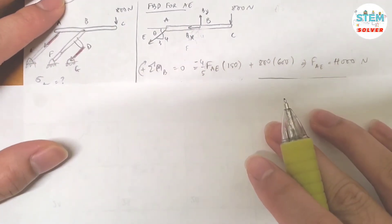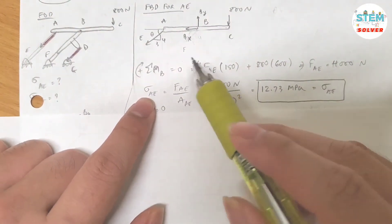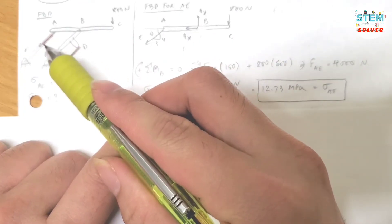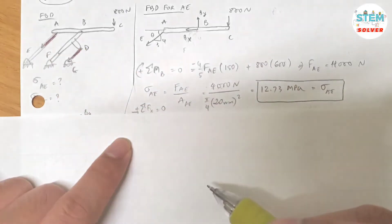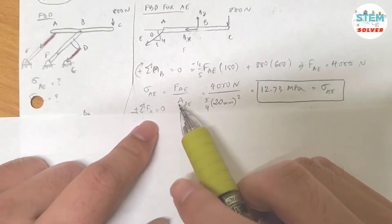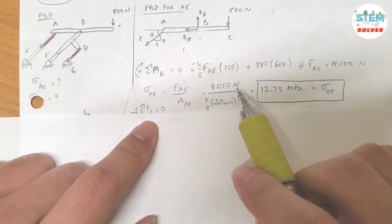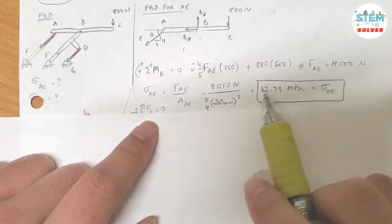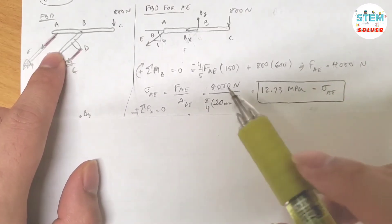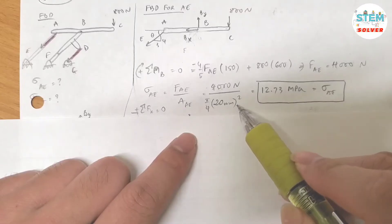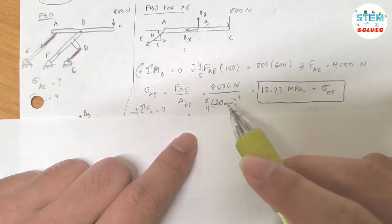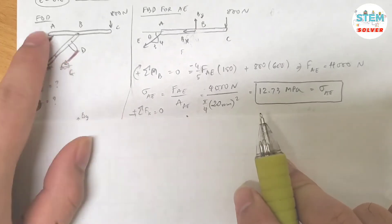Now we can find the normal stress in AE because we know the force AE, and we are also given the diameter of the hydraulic cylinder. So the normal stress is equal to the force divided by the area. So I have the force of 4000 which I just found divided by the area of this cylinder, so I have pi over 4 times the diameter which is 20 squared. So if I put this into my calculator, I would get 12.73 MPa, and that is the normal stress in member AE.